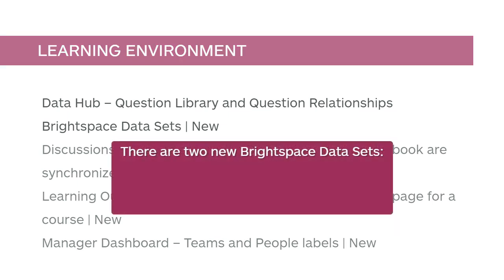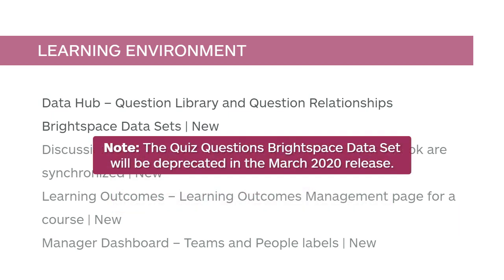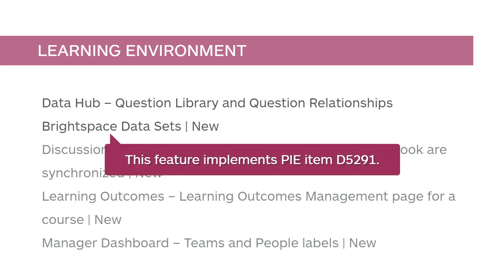There are two new Brightspace datasets. Question Library details all the questions that have been created in your organization. Question Relationships details the quizzes, sections, and question pools that have questions added in your organization. The Quiz Questions Brightspace dataset will be deprecated in the March 2020 release. This feature implements PI Item D5291.